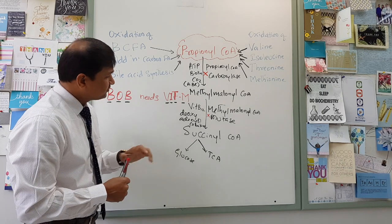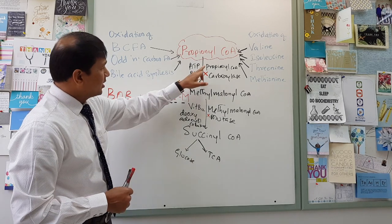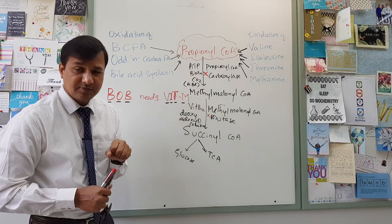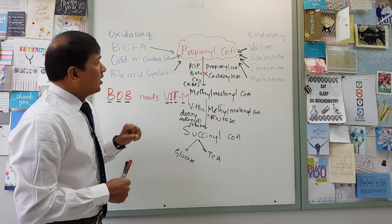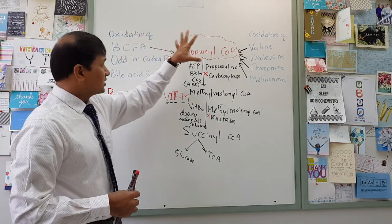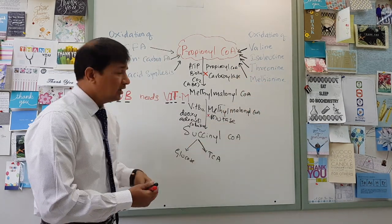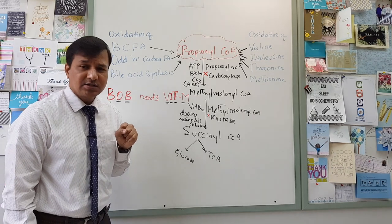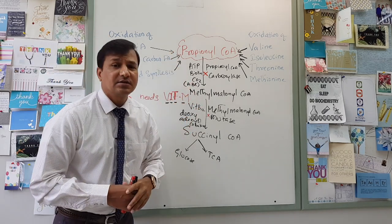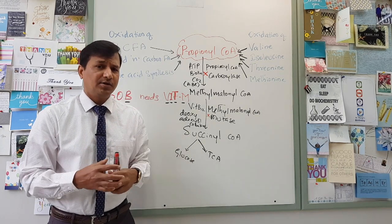These are some of the applied aspects. Methylmalonic acidemia can also occur due to vitamin B12 deficiency, and propionic acidemia can occur due to biotin deficiency, since those are the coenzymes for the respective enzymes. In cases of propionic acidemia or methylmalonic acidemia, we need to reduce consumption of branched chain fatty acids, valine, isoleucine, threonine, and methionine — which often come from dairy products — thereby reducing signs and symptoms.